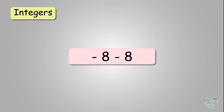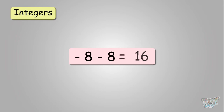Next: negative eight minus eight. Again, you have two similar signs — both are negative numbers — so add these two numbers. Eight plus eight is sixteen, and the sign is minus, so the answer is negative sixteen.